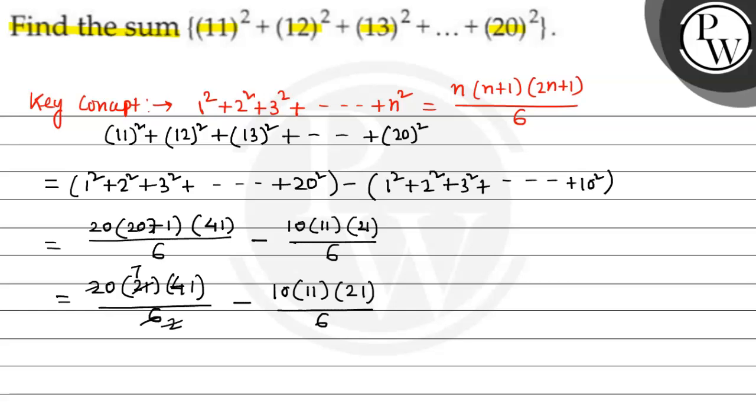So, after multiplication the first part you get 2870 minus 385.